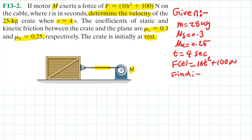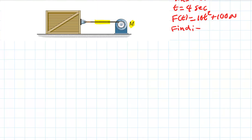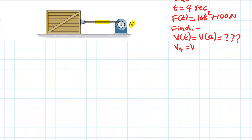We are asked to find the velocity as a function of time when time is 4 seconds — that is, the final velocity at t = 4 seconds.